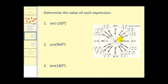Let's sketch the angle negative 150 degrees. Because it's negative, we go clockwise 150 degrees — there's negative 90, and negative 60 more brings us to this point on the unit circle. We use this point to determine sine of negative 150 degrees. Remember, sine equals y, so we have negative one-half.